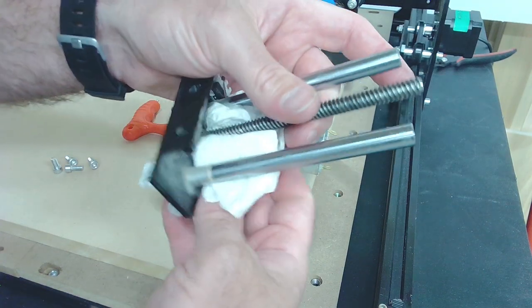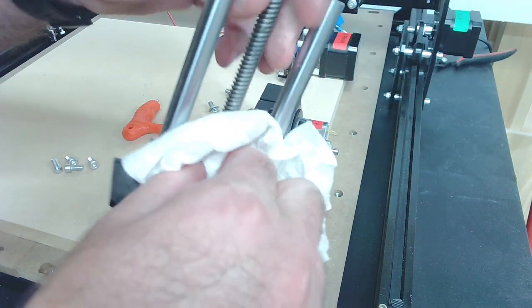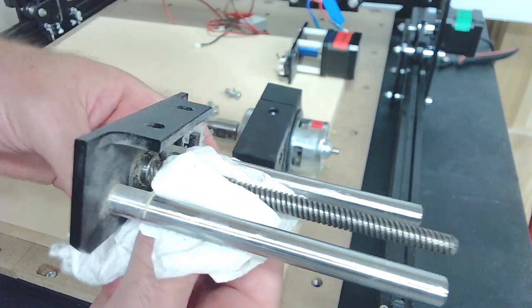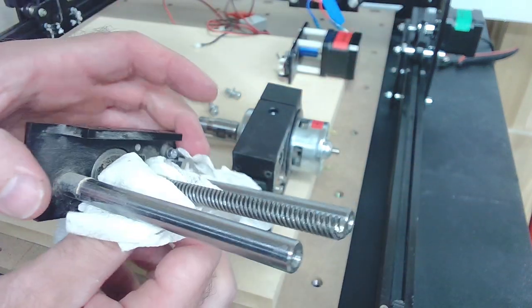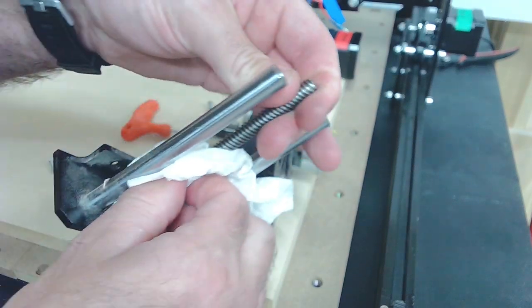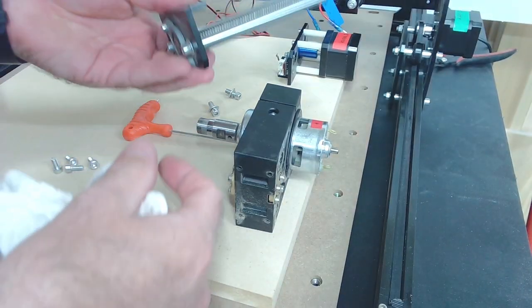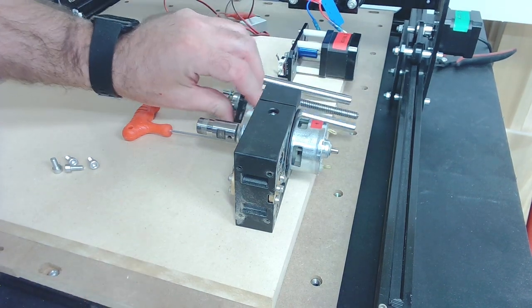I'm going to remove all the lubrication that's on this lead screw as well. I'll be replacing that with some PTFE dry lube. It's got something on it already, and I'm just afraid that's going to cause more sawdust to stick to it. All right, so we're basically done with that part.